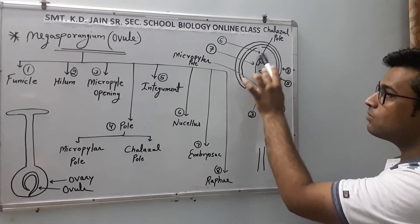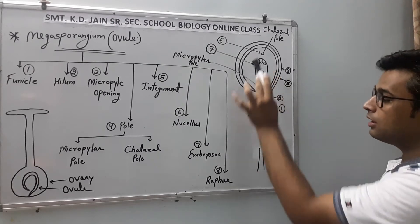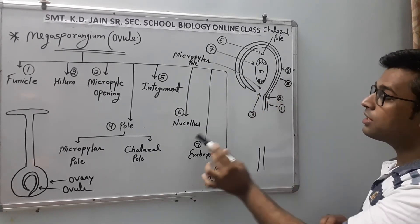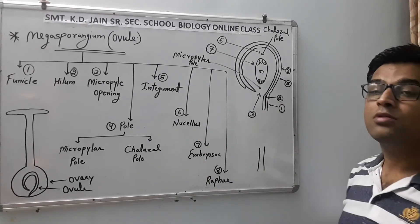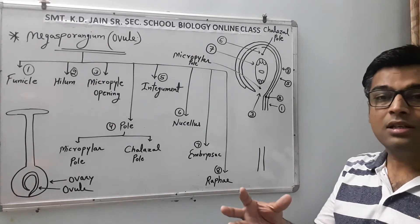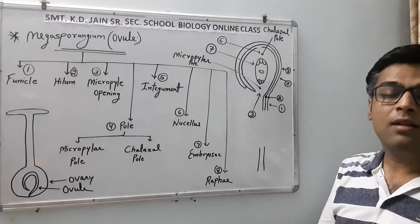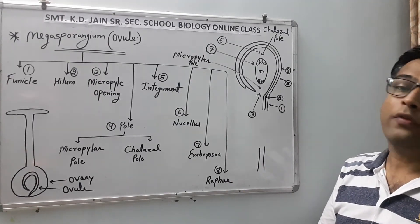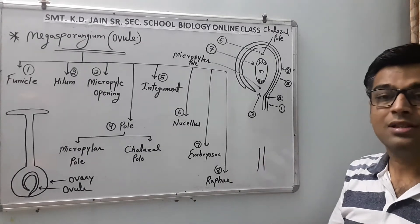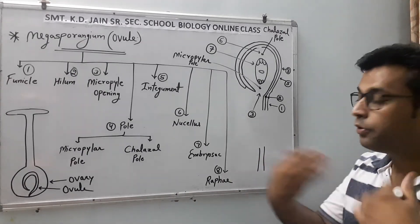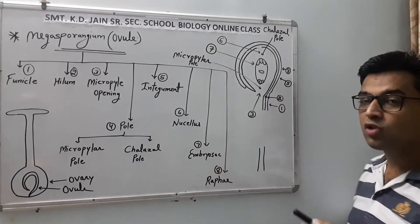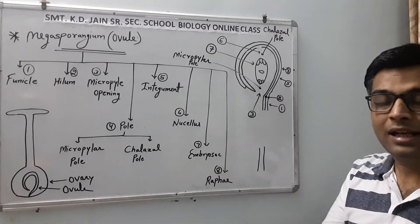Now, Nucellus — this is the central portion. The Embryo sac develops from the Nucellus. Nucellus is the central part of the Ovule, and the Nucellus develops to form the Embryo sac, as shown in the diagram.